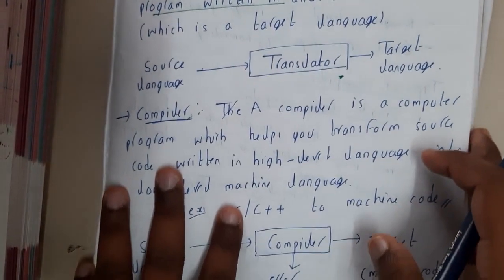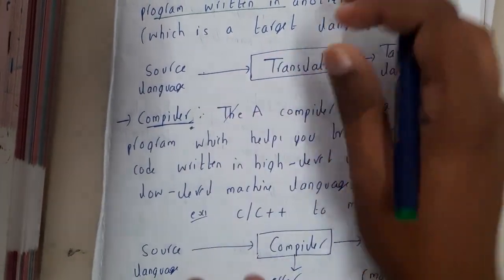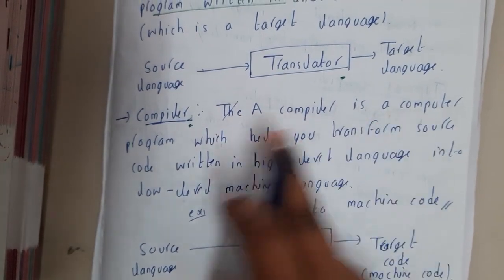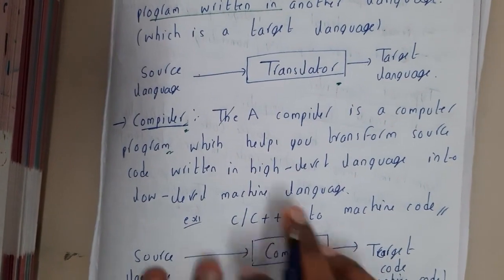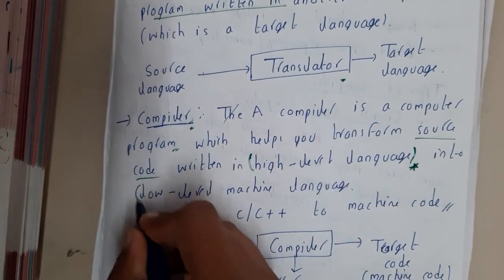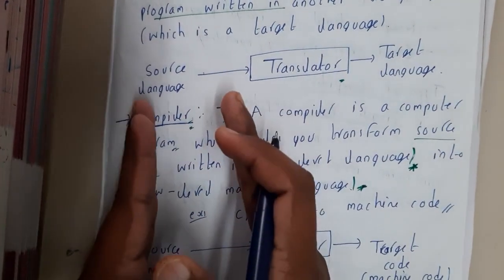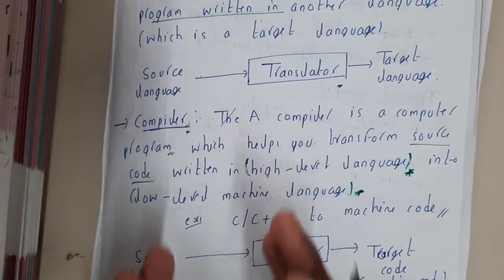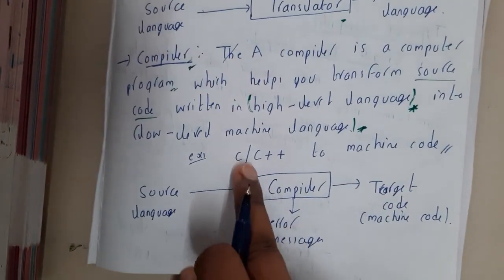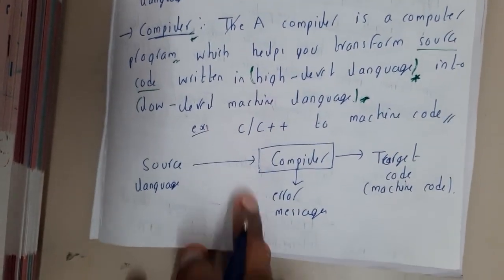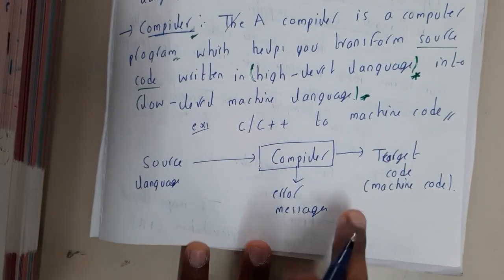Now let us go through the compiler. By adding some restrictions to the translator we achieve the compiler. A compiler is a computer program which helps you transform the source code written in a higher level language into lower level machine language. So you are converting from a higher level to a lower level language — for simple understanding, think of C or C++ being converted to machine code. In the block diagram, source code is taken as input, machine code is the output, and there may also be some error messages displayed.